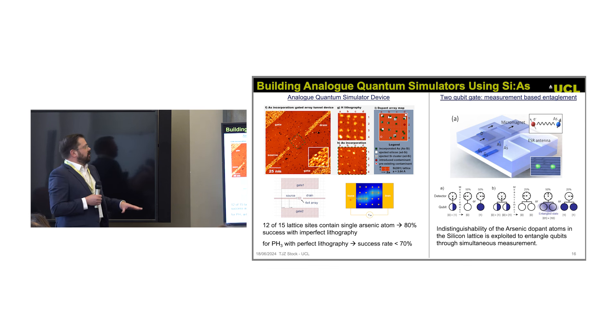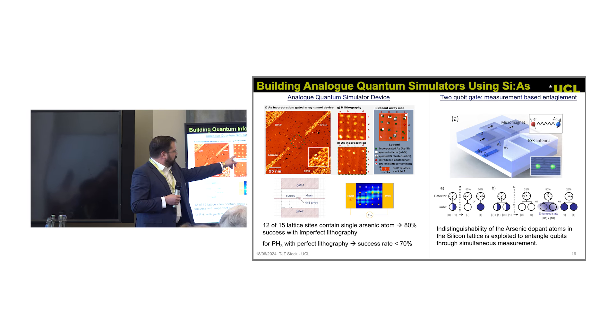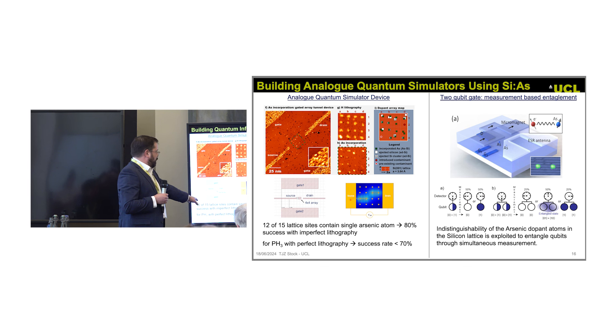Now using this, we're starting to build some stuff. I showed you this idea for an analog quantum simulator. Here we try to build it. We get pretty good incorporation rate, 80% of these 16 lattice sites, and that's without trying too hard. If you try to do this in phosphorus with the best lithography, your best you'll do is 70%.